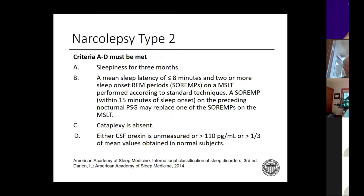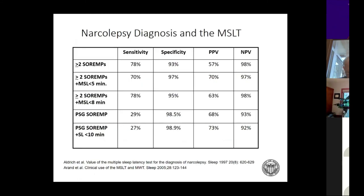For narcolepsy type 1: sleepiness for three months, cataplexy, falling asleep within eight minutes on the naps, and two sleep-onset REMs. For narcolepsy type 2: sleepy for three months, same MSLT requirements, but cataplexy is absent and CSF orexin would be normal. There's thinking that type 1 is the true autoimmune narcolepsy and type 2 may be a different disease altogether. Both diseases have sleep-onset REMs on the nap test and are treated the same way. Two sleep-onset REMs with sleep latency under eight minutes gives specificity of 95% and sensitivity of 78%.